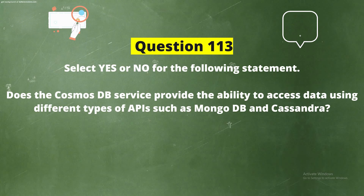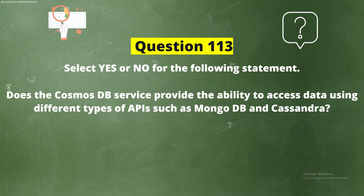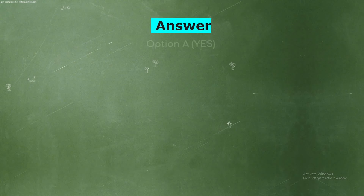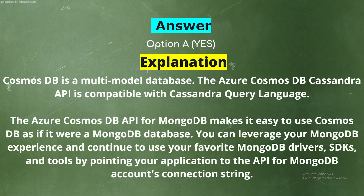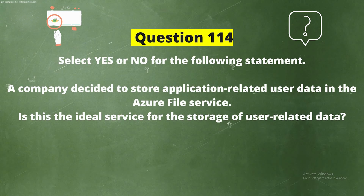Question 113: Select yes or no — does the Cosmos DB service provide the ability to access data using different types of APIs such as MongoDB and Cassandra? The correct answer is Option A: Yes. Cosmos DB is a multi-model database. The Azure Cosmos DB Cassandra API is compatible with Cassandra Query Language, and the API for MongoDB makes it easy to use Cosmos DB as if it were a MongoDB database, using your favorite MongoDB drivers, SDKs, and tools.